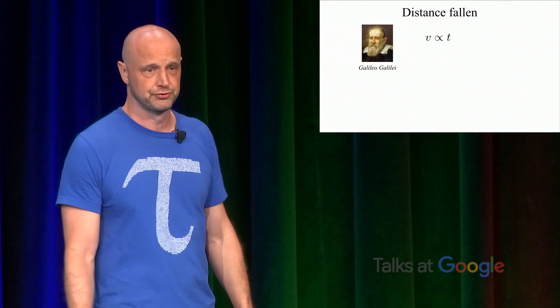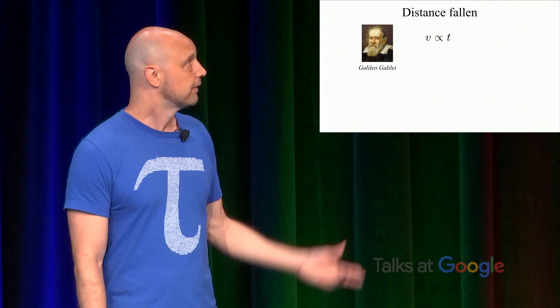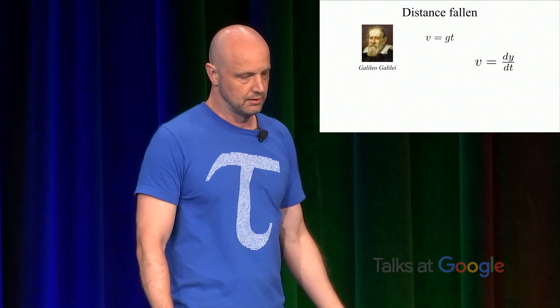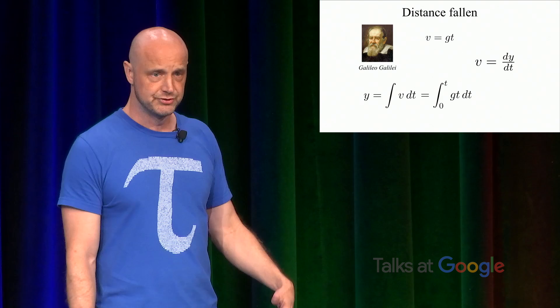We're going to start with a calculation for the distance an object falls in a particular amount of time. So Galileo Galilei found that the velocity of a dropped object is proportional to the time it's fallen. So if it falls twice as long, it goes twice as fast. The constant of proportionality is the gravitational acceleration, g. And in this context, the velocity can be defined as the time rate of change of the height, dy dt. So we can find the distance fallen by integrating v dt, which is the integral of gt dt. The g is just a constant. We can pull it out. The integral of t is t squared over 2. So y is equal to one-half gt squared.